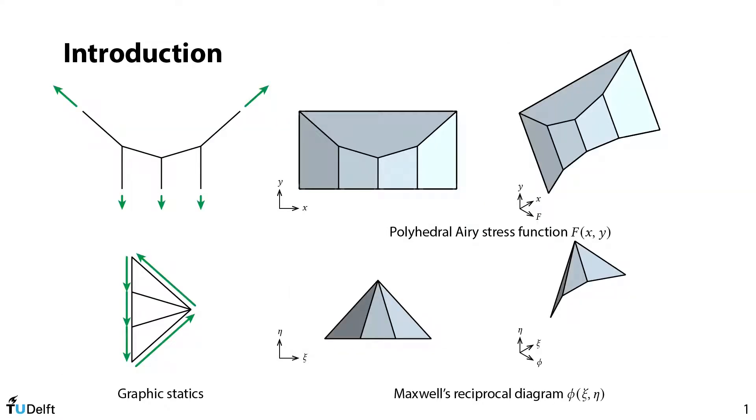The Airy stress function is tightly connected with geometry, especially the graphic statics and the Maxwell's reciprocal diagram. On your left, you can see an example of graphic statics. It's a chain hanging with three weights below it, where the green arrows indicate the internal forces. The equilibrium of each node can be confirmed by a closed polygon. For instance, the red node in the form diagram and the corresponding red triangle in the force diagram.